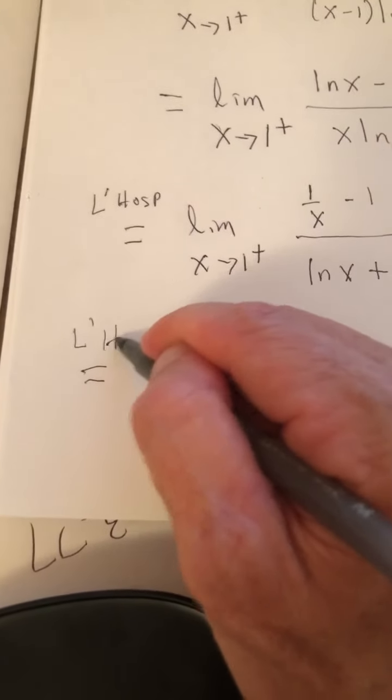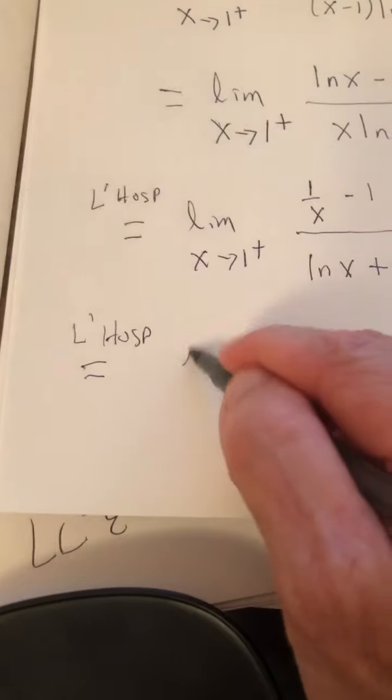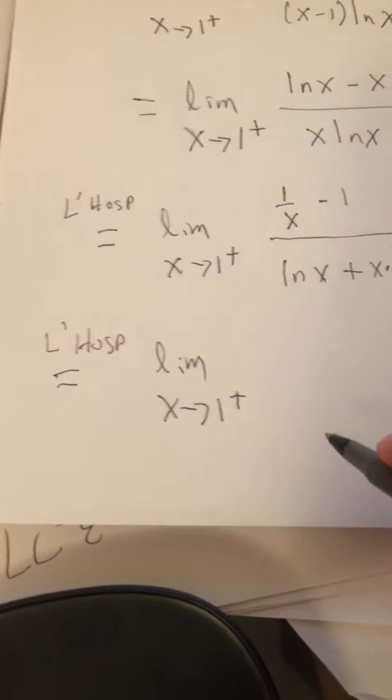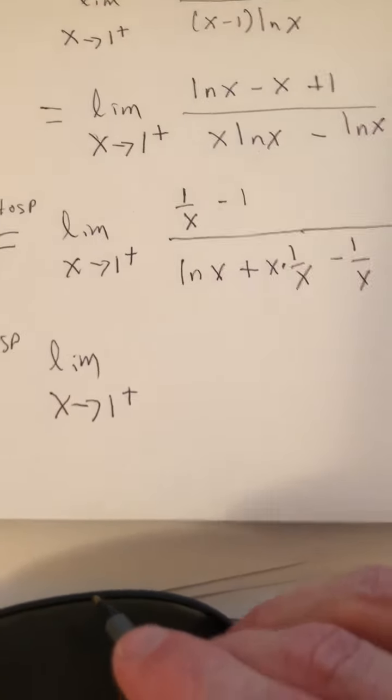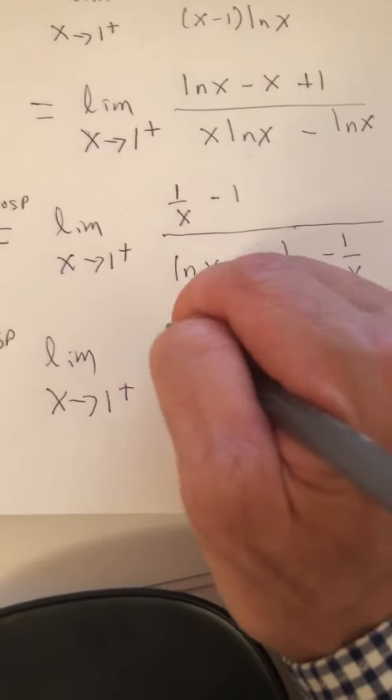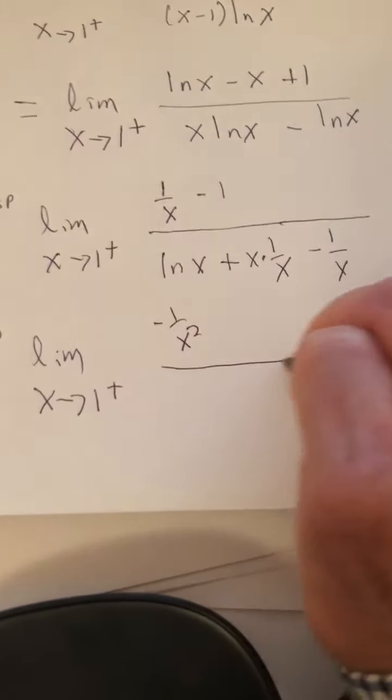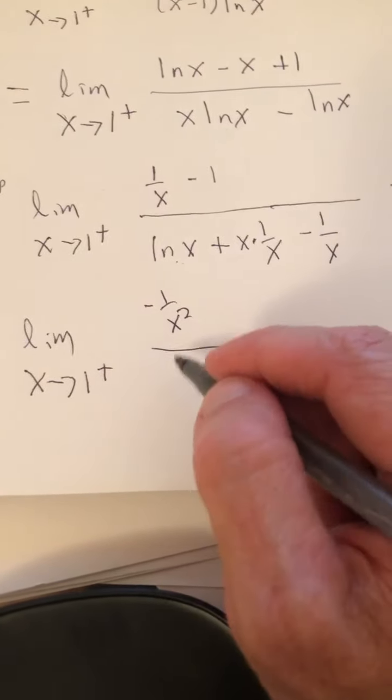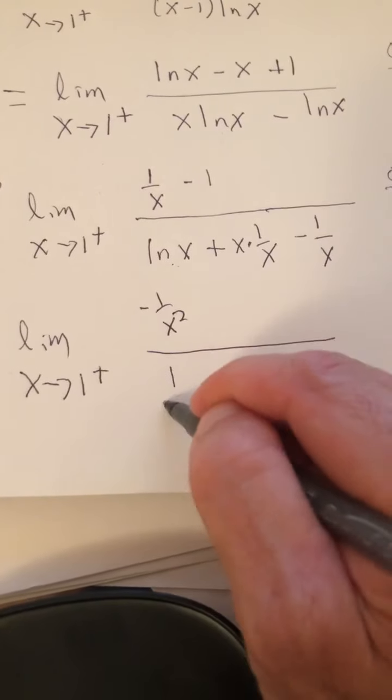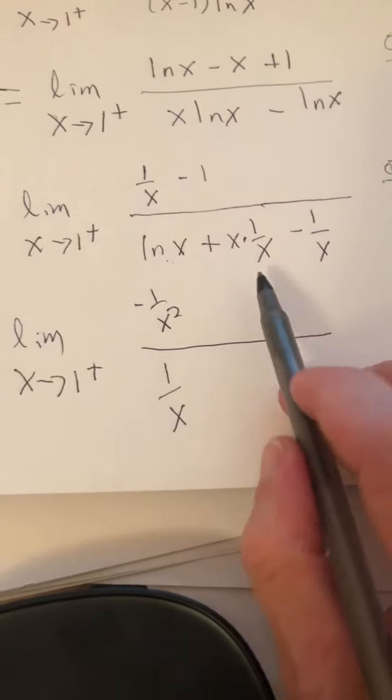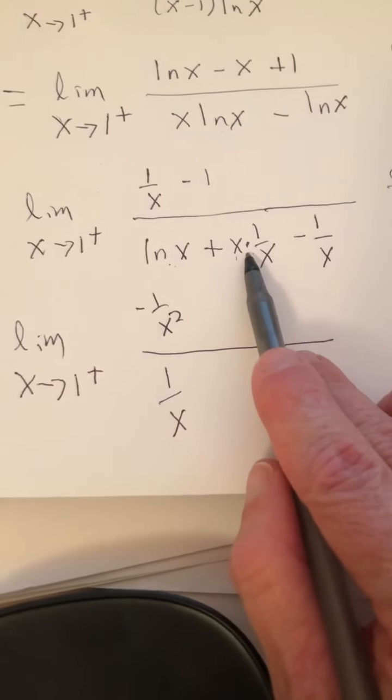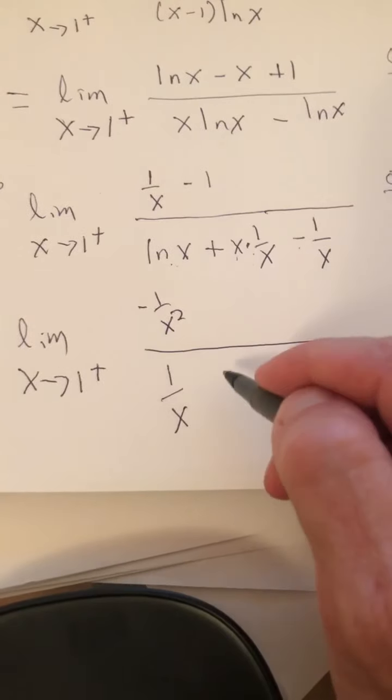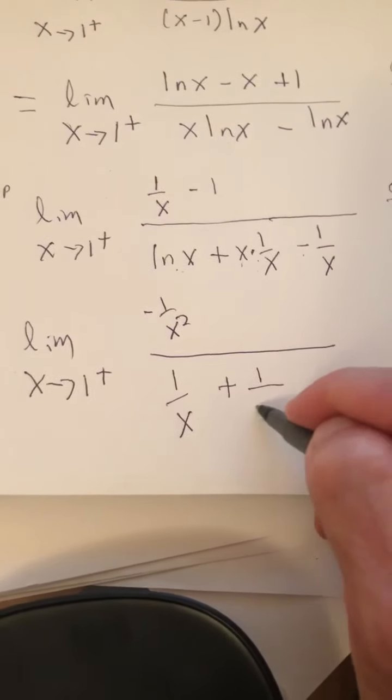So we now have the limit as x approaches 1 from the right of, well, let's see. The derivative of 1 over x is negative 1 over x squared. The derivative of the natural log of x is 1 over x. x times 1 over x is 1, the derivative of 1 is 0, and the derivative of negative 1 over x is plus 1 over x squared.